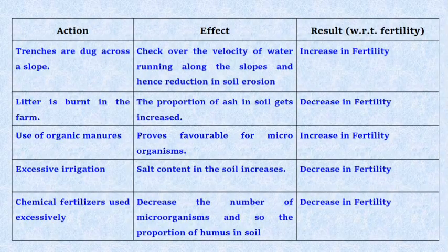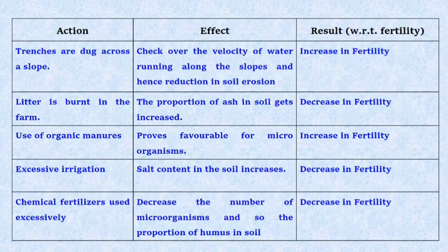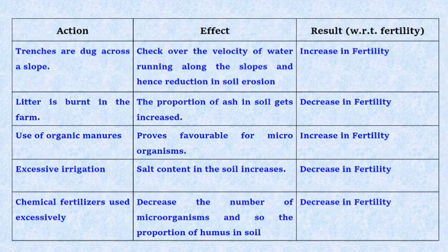Table on actions and their effects on soil fertility: Across a slope — effect: checks the velocity of water running along the slopes and reduces soil erosion — result: increase in fertility. Litter burnt in the farm — effect: proportion of ash in soil gets increased — result: decrease in fertility. Use of organic manures — effect: proves favorable for microorganisms — result: increase in fertility. Excessive irrigation — effect: salt content in the soil increases — result: decrease in fertility. Chemical fertilizers used excessively — effect: decreases the number of microorganisms and the proportion of humus in soil — result: decrease in fertility.